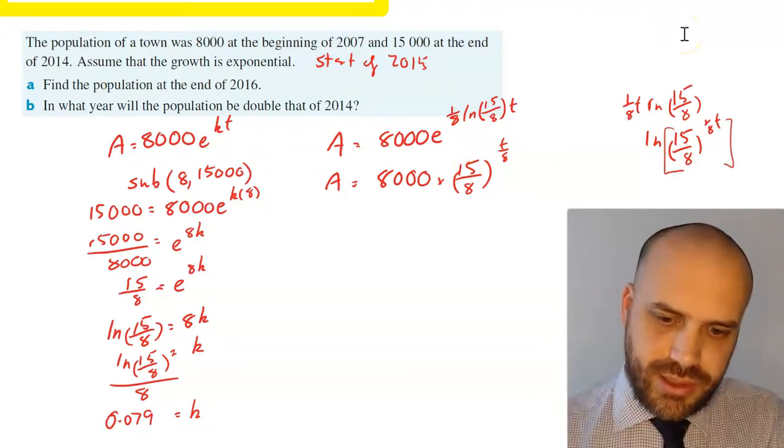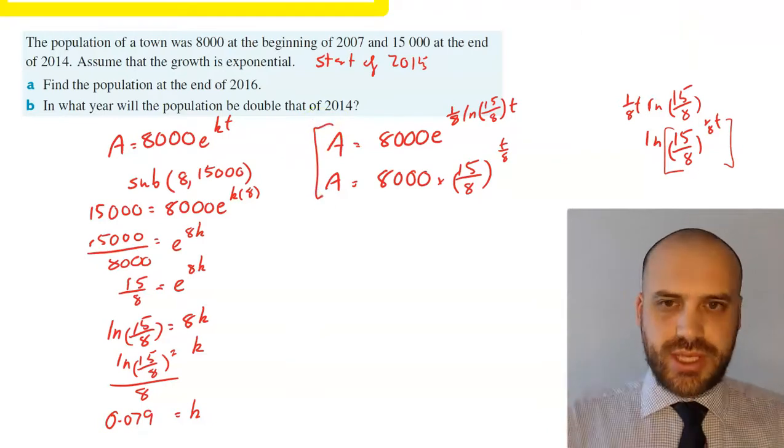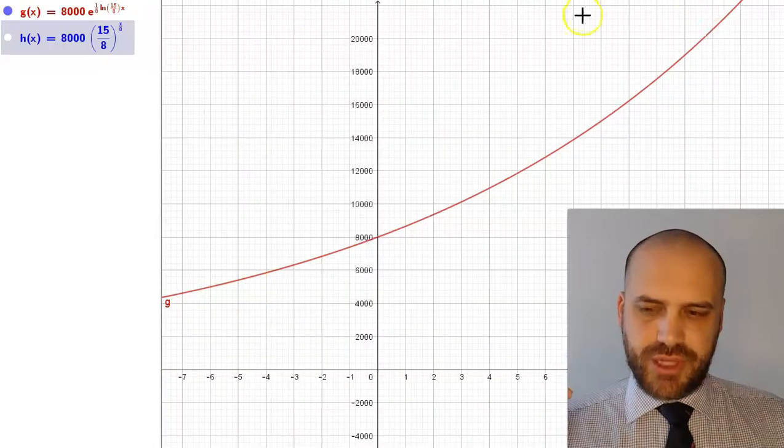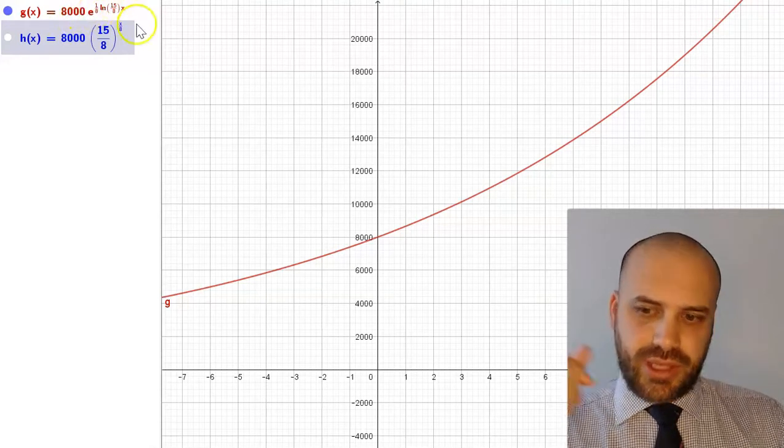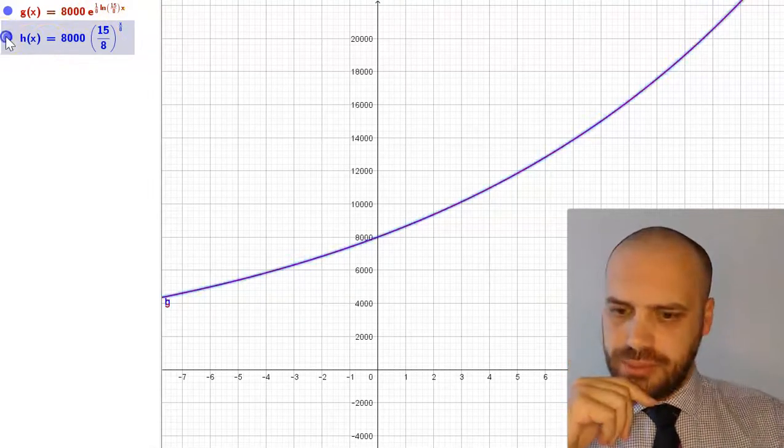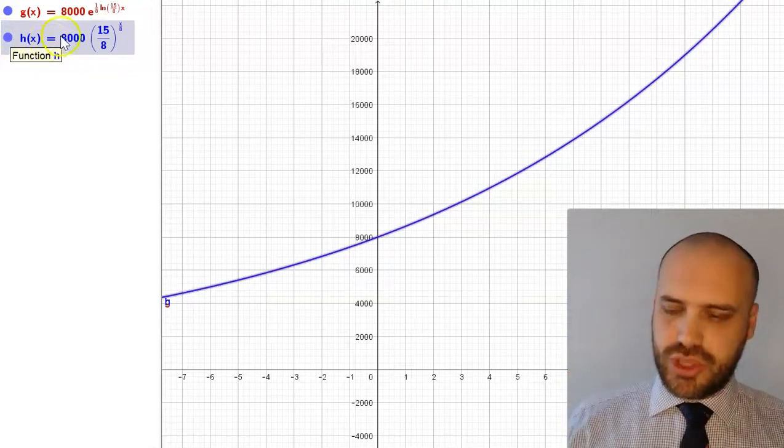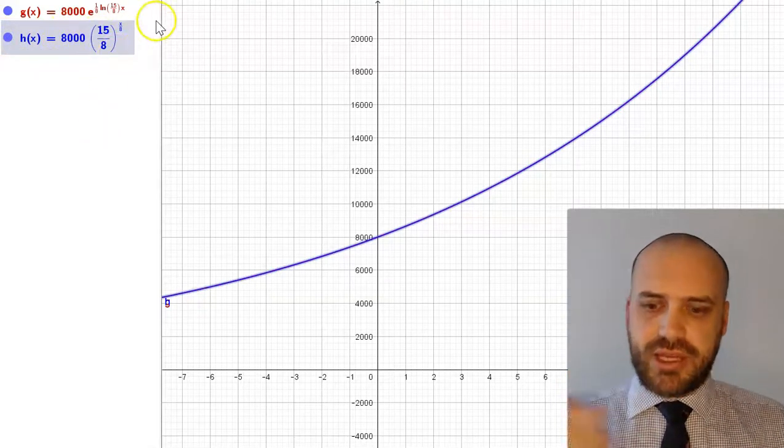Finally, if you are doubting that these two are equivalent statements, let's take a look. This red function here is 8000e^((1/8)ln(15/8)x), and this blue function, right on top of it, is 8000(15/8)^(x/8).